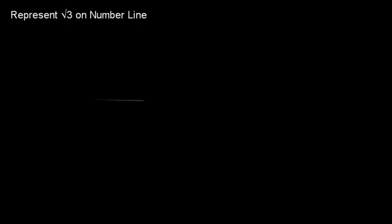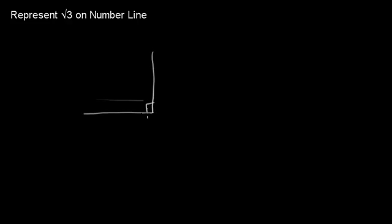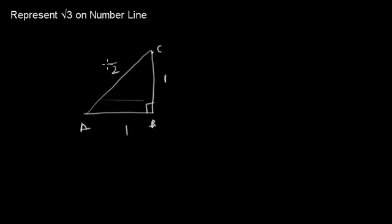We can also get root 2 from a triangle in which two sides are each 1 unit — then the hypotenuse is root 2. For example, in triangle ABC where AB is 1 and BC is also 1, then AC will be root 2.